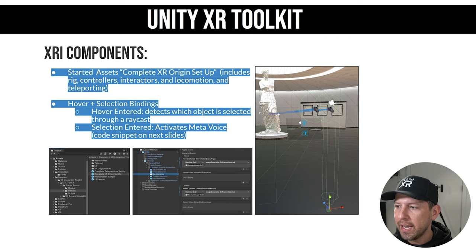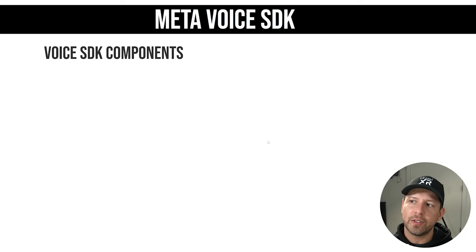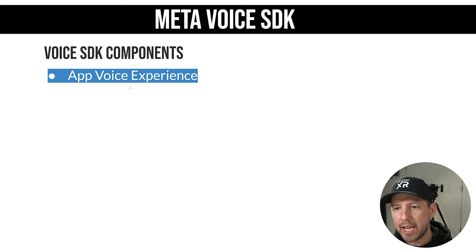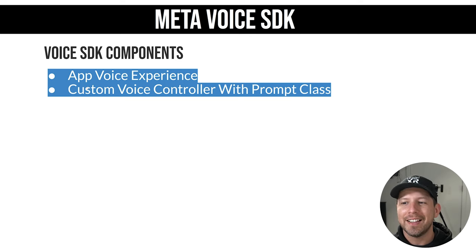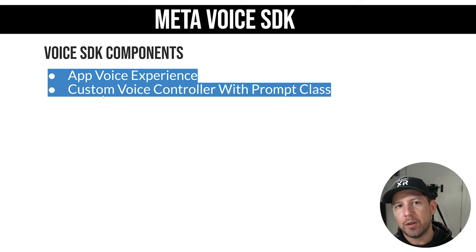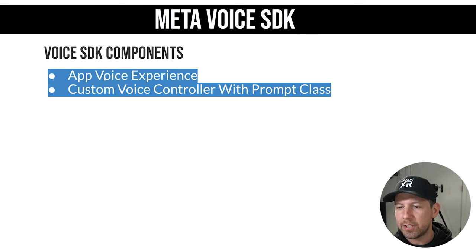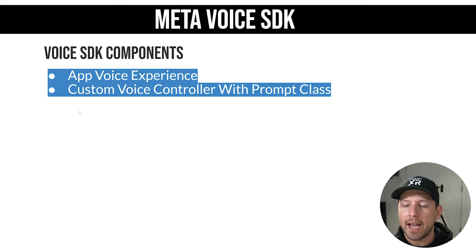Moving to the Voice SDK — I'm using the App Voice Experience. I didn't want to use something too complicated; this just allows me to drag and drop a component called the App Voice Experience. Once I have that set up, I can basically start getting the transcript, which is what I needed for this experience. I didn't need to do any mappings from my voice to methods in Unity. All I really needed was a transcript. So once I finish providing a voice audio recording, I want to get the text that I can send to OpenAI so that it can generate an image.